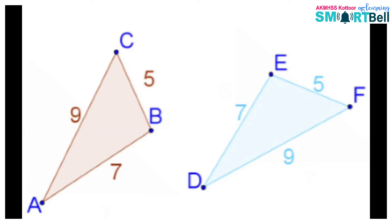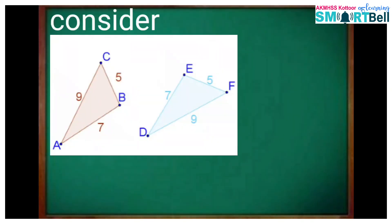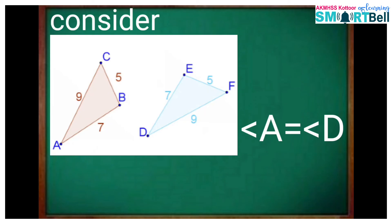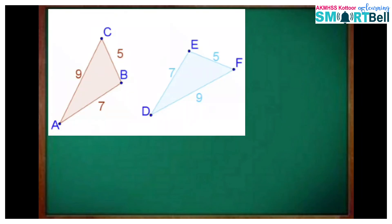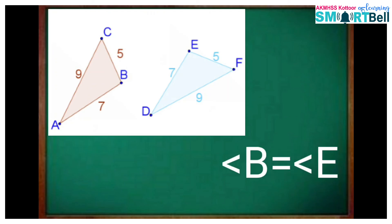But how do the angles match? Here, angle A is the smallest angle in triangle ABC. The smallest angle in triangle DEF is angle D. So, angle A equals angle D. These 2 angles are opposite to the smallest side of the triangles. Angle B and angle E are the largest angles in the 2 triangles, so angle B equals angle E. These 2 angles are opposite to the largest side of the triangles.